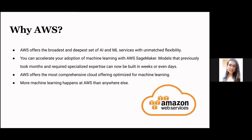We have used AWS in our project because AWS offers the broadest and deepest set of AI and ML services with unmatched flexibility. You can accelerate the adoption of machine learning with AWS SageMaker. Models that previously took months and required specialized expertise can now be built in weeks or even days. AWS offers the most comprehensive cloud offering optimized for machine learning, and more machine learning happens at AWS than anywhere else.